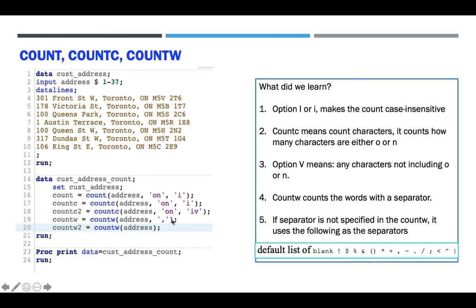The last function is COUNTW, the count word function. You can put a delimiter if you want. If you put a delimiter, it will treat everything between delimiters as one word — in this case a comma is used as a delimiter. If you don't specify a delimiter and use the default, it will break down by default delimiters such as blank space, dollar sign, and percent sign. Those will be used as delimiters.